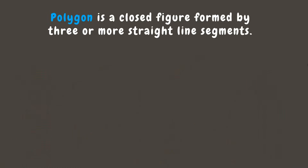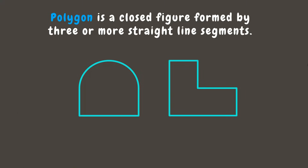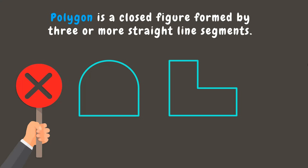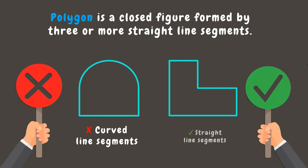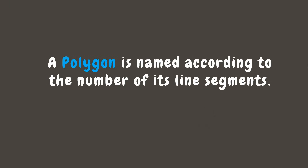Let's have another one. Which one do you think is a polygon and which one is not? The first figure is not a polygon since it has curved line segments, while the second one is a polygon since it is a closed figure with straight line segments. Remember that a polygon is named according to the number of its sides or line segments.